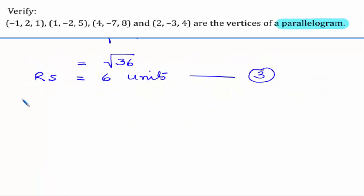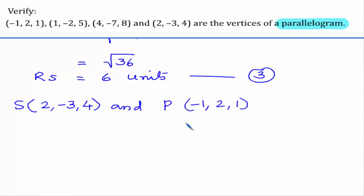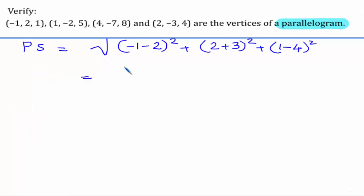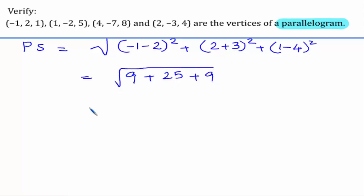In the same way, let us consider S as (2, -3, 4) and P as (-1, 2, 1) and find PS. On substituting, we get: minus 1 minus 2 is minus 3, whole square is 9; 2 plus 3 is 5, squared is 25; 1 minus 4 is minus 3, whole square is 9. Then we get root 43. This is PS.